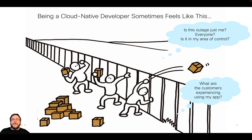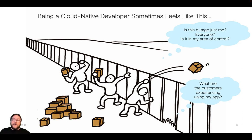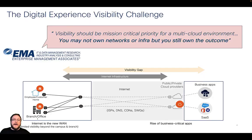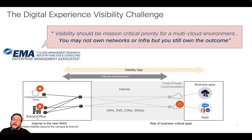As a cloud native developer, sometimes I feel like I develop some of the best things and then I throw it over the fence to my customers, but my applications are dependent on the big internet and there are outages all the time. Sometimes they impact me, but many times they don't. So I often wonder: is this outage impacting me? Is it impacting everyone? Is it within my span of control? And what is my customer experiencing as my application uses dependent services across the internet? The Enterprise Management Association's group says that visibility should be a mission-critical priority for a multi-cloud environment. You may not own the networks or the infrastructure, but you still own the outcome. And if your customers are unhappy, that could hurt your brand.